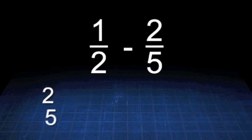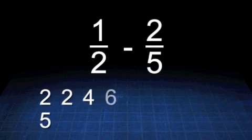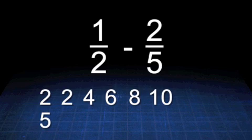The multiples of 2 are 2, 4, 6, 8, and 10. The multiples of 5 are 5 and 10. The LCD is 10.